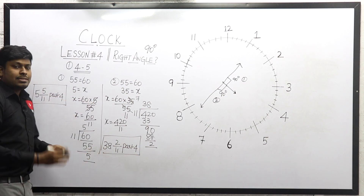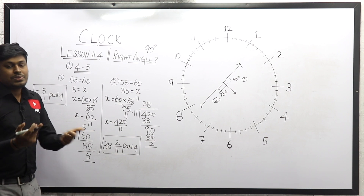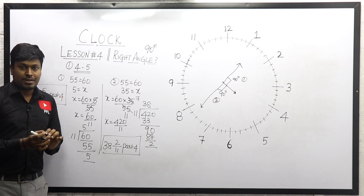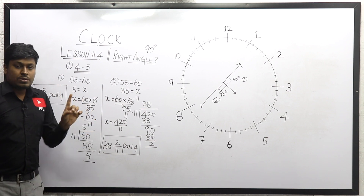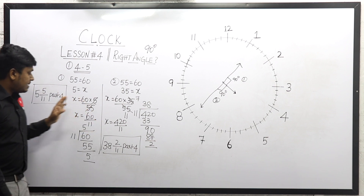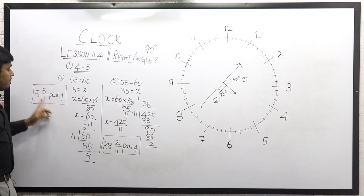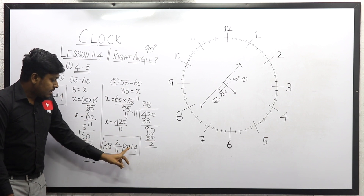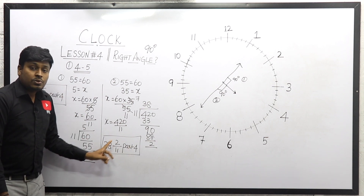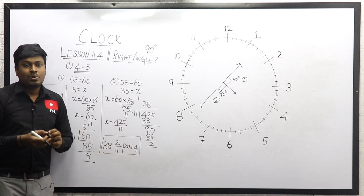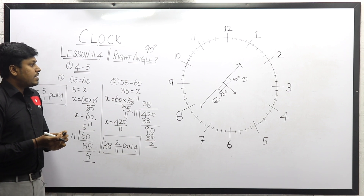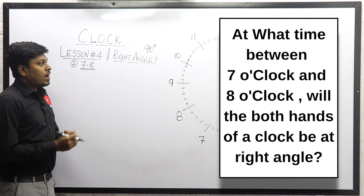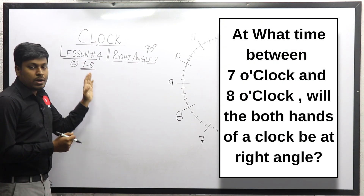Both answers won't be in the options simultaneously — any one will be in the option, so mark it. The hands of the clock are at right angle either at 4 o'clock 5 5/11th minute, or at 4 o'clock 38 2/11th minute. This is the answer for question number one.